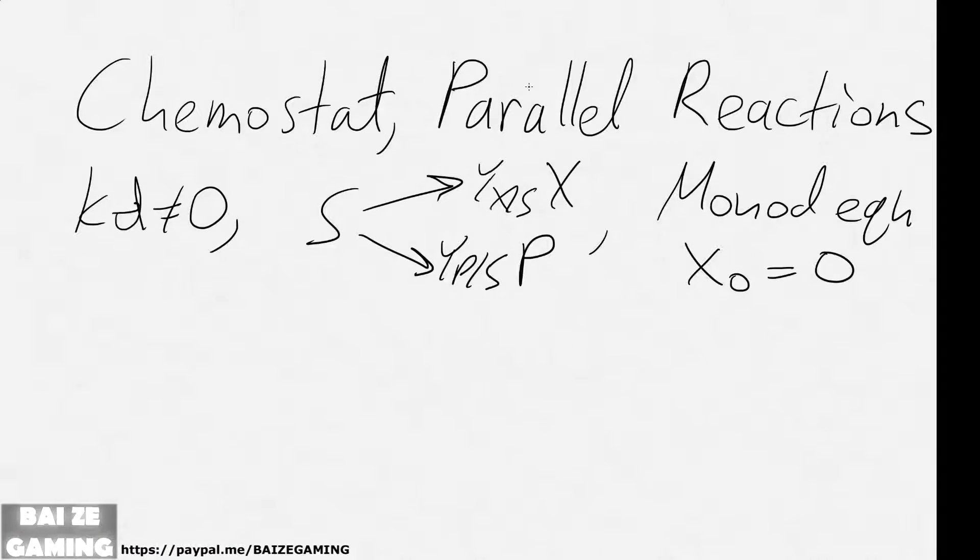Okay, so what if we do a chemostat with a reaction that's a little bit more complicated? Let's say that we have parallel reactions. So here we have a substrate, and instead of the substrate just being turned into biomass X, we also have the substrate being turned into a product P.